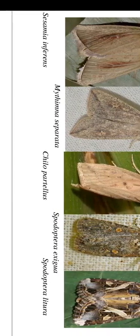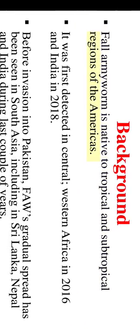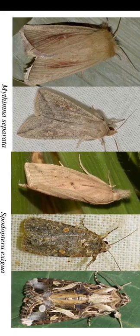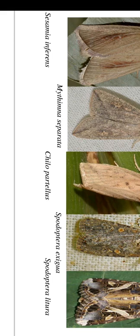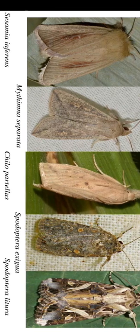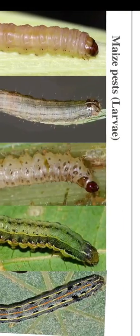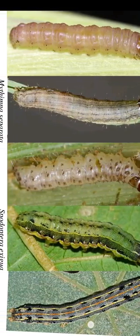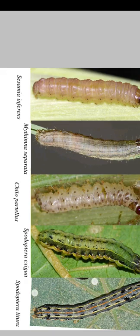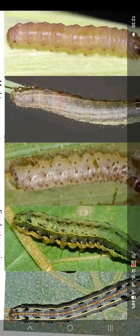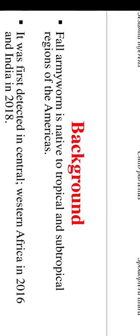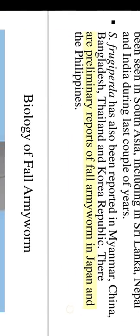Fall armyworm is native to tropical and subtropical regions of the Americas. It was first detected in Central and Western Africa in 2016, and India in 2018. Before invasion into Pakistan, FAW's gradual spread has been seen in South Asia, including Sri Lanka, Nepal, and India during the last couple of years. Spodoptera has also been reported in Myanmar, China, Bangladesh, Thailand and Korea Republic. There are preliminary reports of fall armyworm in Japan and the Philippines.